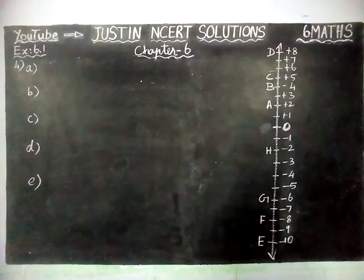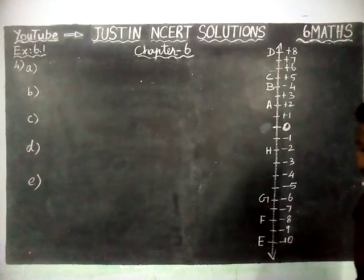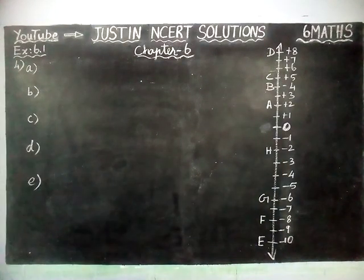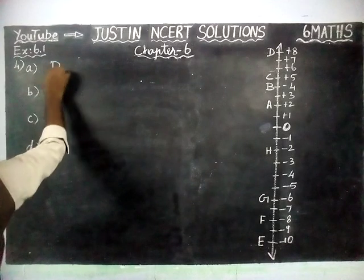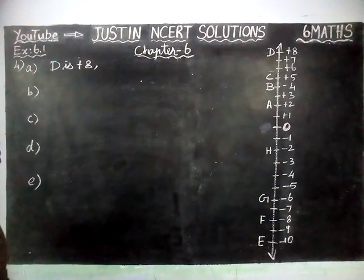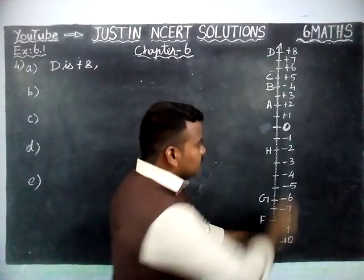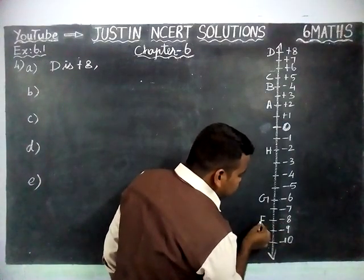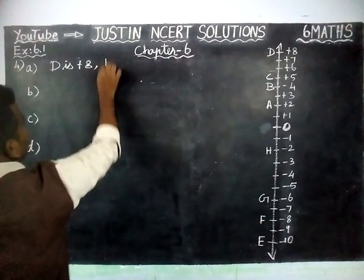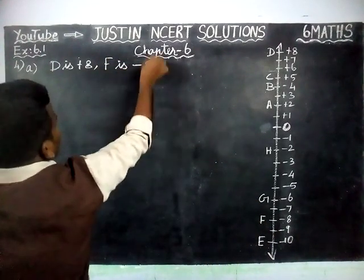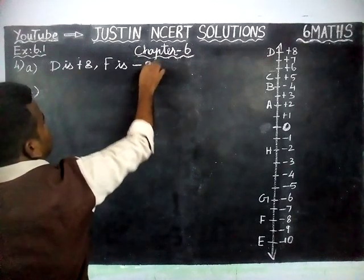If point D is plus 8, the first question: point D is plus 8, then what is minus 8? Here, minus 8 is below 0, and minus 8 is point F. So F is minus 8. The first question answer is minus 8.